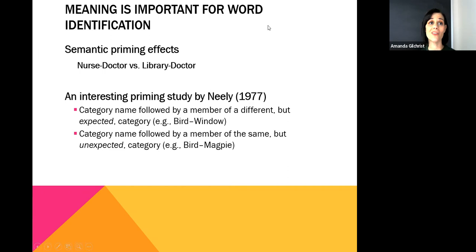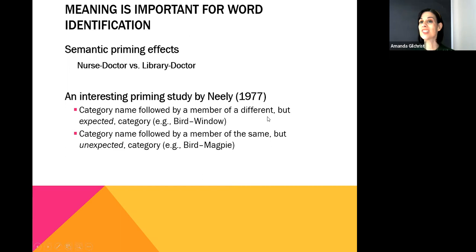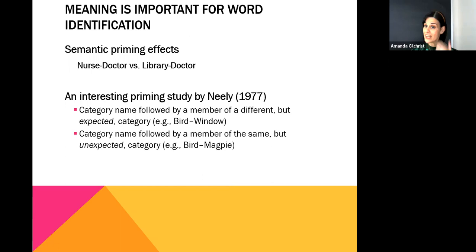We have a phenomenon known as semantic priming: if I give you the word 'nurse,' the word 'doctor' is more likely to be activated because they have a very similar meaning and are strongly associated. Compare that to 'library' and 'doctor' — unless you're thinking of that Doctor Who episode where Donna Noble gets saved in the library — library doesn't have as strong a connection with doctor. Library won't prime doctor the way nurse does.